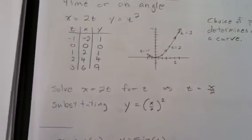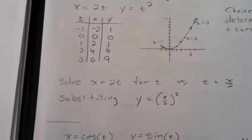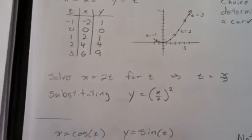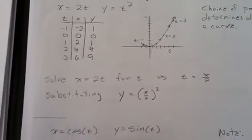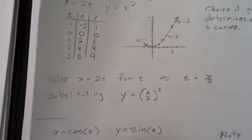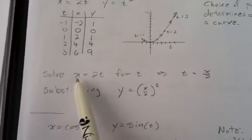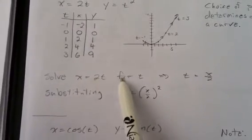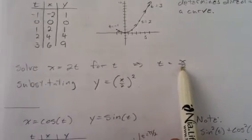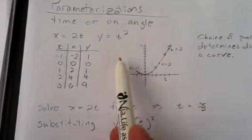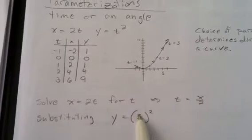Sometimes, however, given a parameterization, we like it to be written as a function of x and y, instead of a function of x and y of the parameter. And so then you have to do some clever mathematics, and each situation is a little different. But here, I could easily take the x equation and solve for t, and then I get t as a function of x.